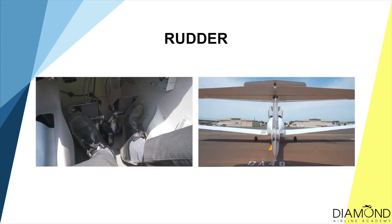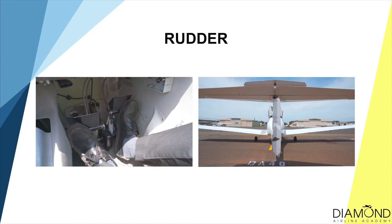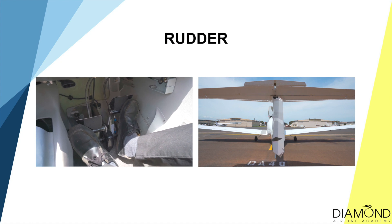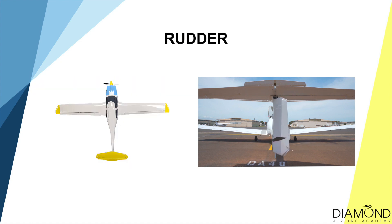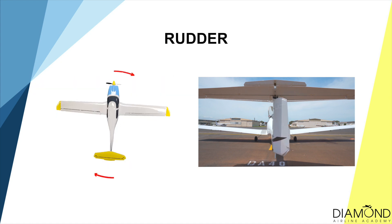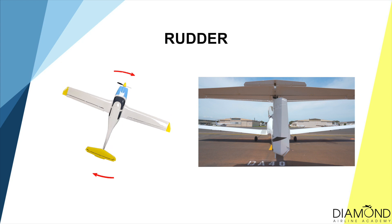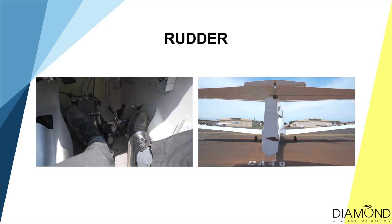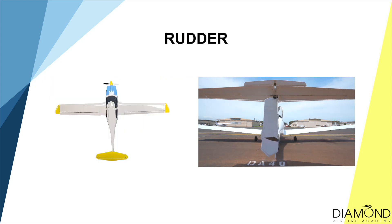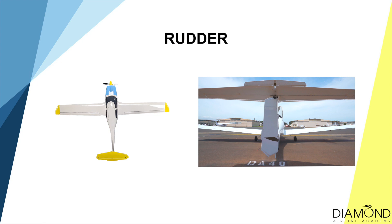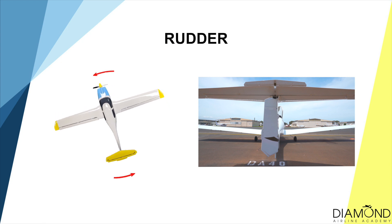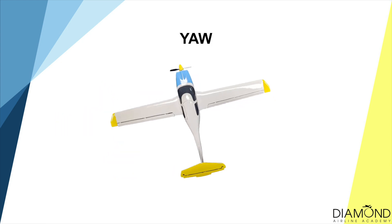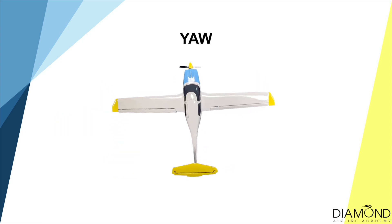How do we control the rudder in the cockpit? We control it using the rudder pedals. If we step on the right pedal, the rudder will move to the right, pointing the plane to the right. If we step on the left pedal, the rudder will move to the left, pointing the airplane to the left. We call this movement yaw.